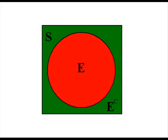This really makes sense in the Venn diagram. The red is E, and the green is E to the C, and the sample space S really is the union of both of them.